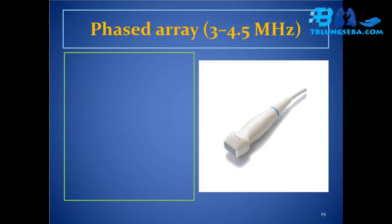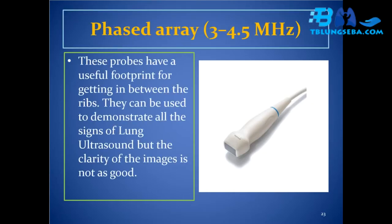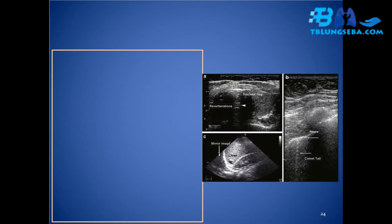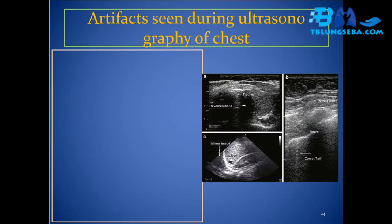Phased array probe (3–4.5 MHz): these probes have a useful footprint for getting in between the ribs. They can be used to demonstrate all the signs of lung ultrasound, but the clarity of the images is not as good as other probes.